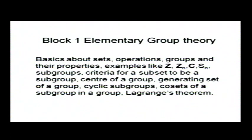Let me remind you what the blocks cover. There are 4 blocks. The first is on elementary group theory — basics about sets, operations, what a group is, and several familiar examples like the integers, integers modulo n, complex numbers, permutations, and properties of groups. Then we come to subgroups and their properties — which subset is a subgroup, the criteria for that. A crucial example is the centre of a group G, written Z(G). That is also significant in Block 2.